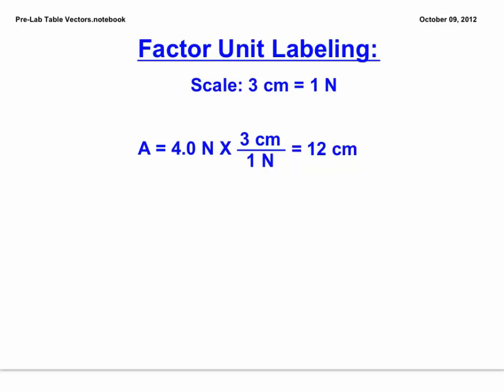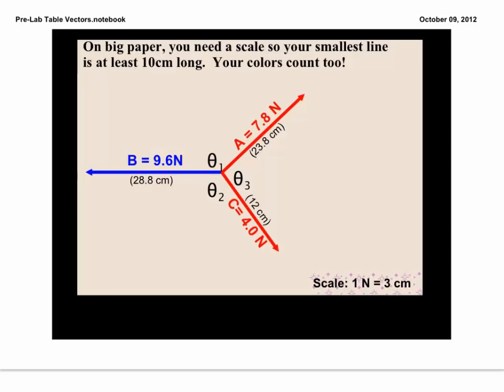Once you've used your scale to convert your vectors over to centimeters, you're going to need to go ahead and get those vectors down on your page. Make sure you notice how we've done this here. We've taken our two shortest vectors and made them one color, and our third longest vector is its own color. We've also labeled each vector with its force value and its length in centimeters.